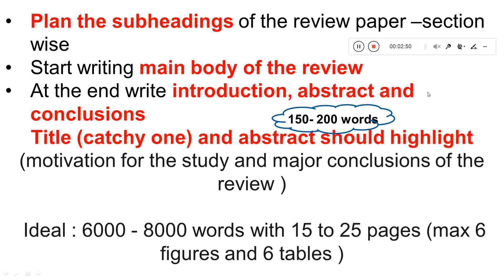For review papers, the introduction, abstract, and conclusion should be written at the end, because once you complete the entire review writing you get a basic idea of how to write the abstract and conclusion. The title should be a catchy one and the abstract should highlight the motivation of the study and the major conclusions from the review. Whenever you submit a review paper to any journal, the first thing the editor sees is the title, so it should be a catchy one that makes them want to process it further.